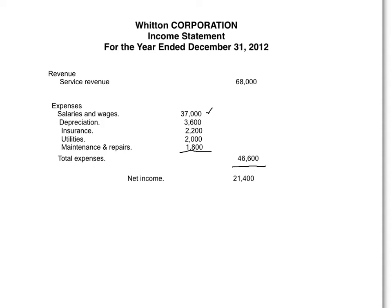We double underline net income. So there's your income statement — revenue and expenses. Expenses can be listed in any order; here they're listed from high to low. When adding, move to the inside column — there are two columns. Total it and bring it to the outside. On the outside, you only have two items: revenue and expenses. The bottom line is net income of $21,400.